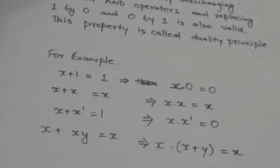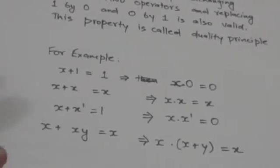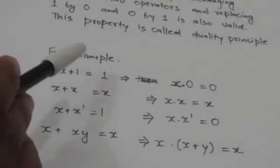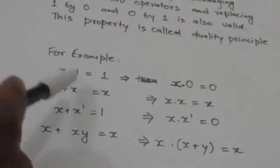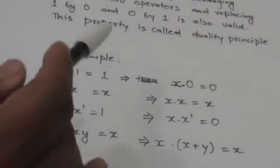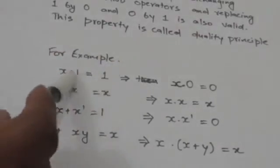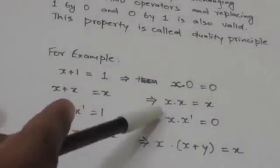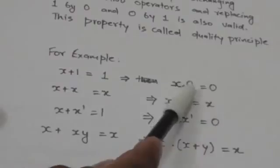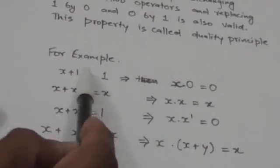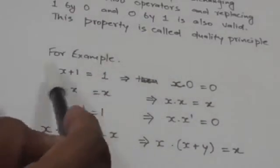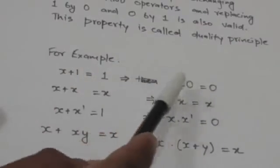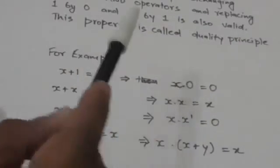Look at this expression: x + 1 = 1. The dual of this expression is obtained by replacing 1 by 0 and the OR operator by the AND operator. So this new expression is the dual of the original. Since the original expression is true, it implies that its dual expression will also be true.